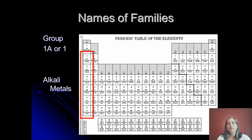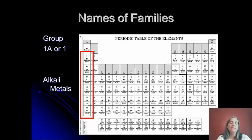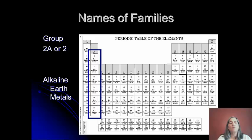Some families have special names. Group 1 is the alkali metals. When I was in high school and college they used 1A, 2A, 3B, and so on, but it's changed — now it's just groups 1 through 18. Hydrogen is left out of the alkali metals family even though it's in that column, because it is not an alkali metal — we'll get to that reason soon. Group 2 is the alkaline earth metals. They're easy to confuse with group 1 since both have 'alkali' in their names, but they're a little different and we'll do a lab to look at that.